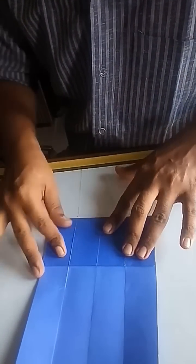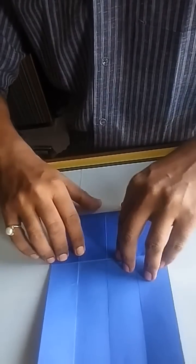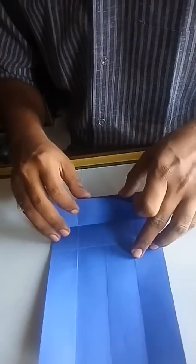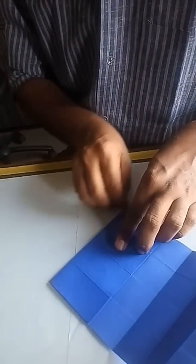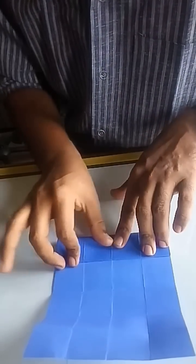Now fold the paper into halves from the breadth side and the sheet is divided into two squares. Now fold the lower portion two times into halves and do the same for the other portion also.